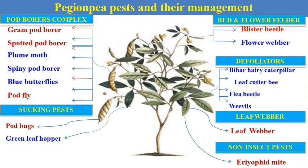The next category is pod bugs and green leaf hopper — these are sucking pests. Then next is bud and flower feeders, in which the blister beetle and the flower weaver are two important major pests of toor crop which attack on the buds and flowers. Then next is defoliators — pests like Bihar caterpillar, leaf cutter bees, philia beetle and flea beetles which attack on the leaves and defoliate the plants. Next is the leaf weaver, and another most important non-insect pest is the eriophyte mite, which acts as a vector for pigeon pea sterility mosaic virus and causes severe yield loss in toor.